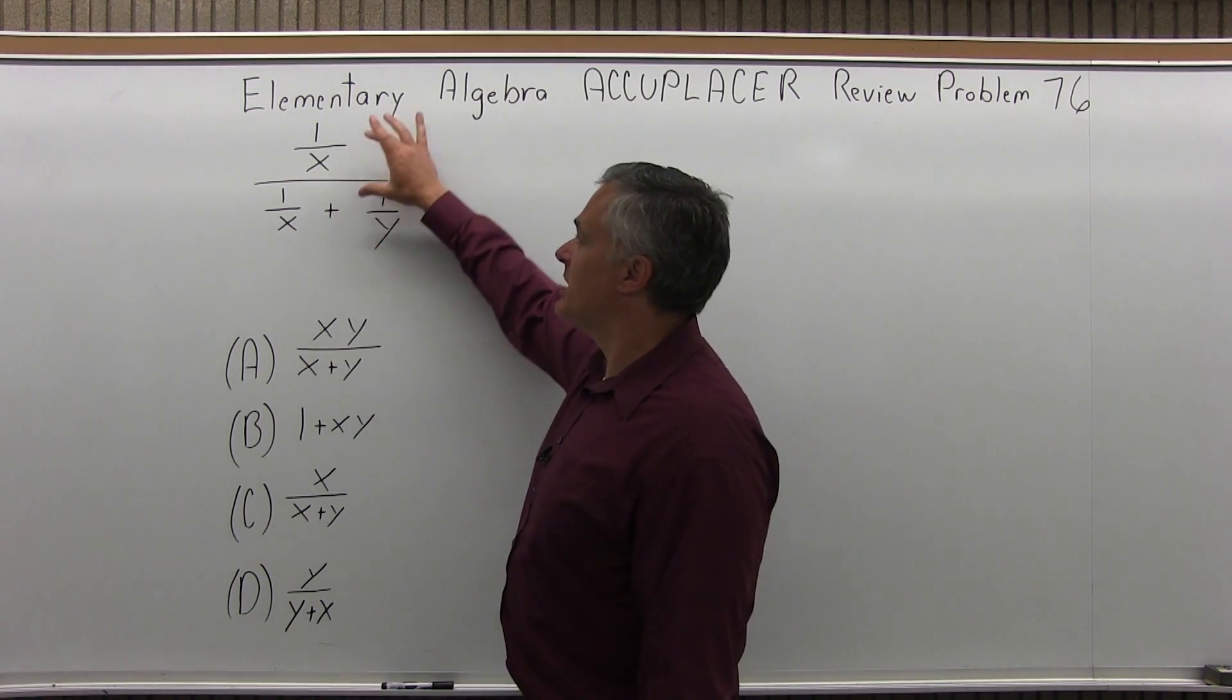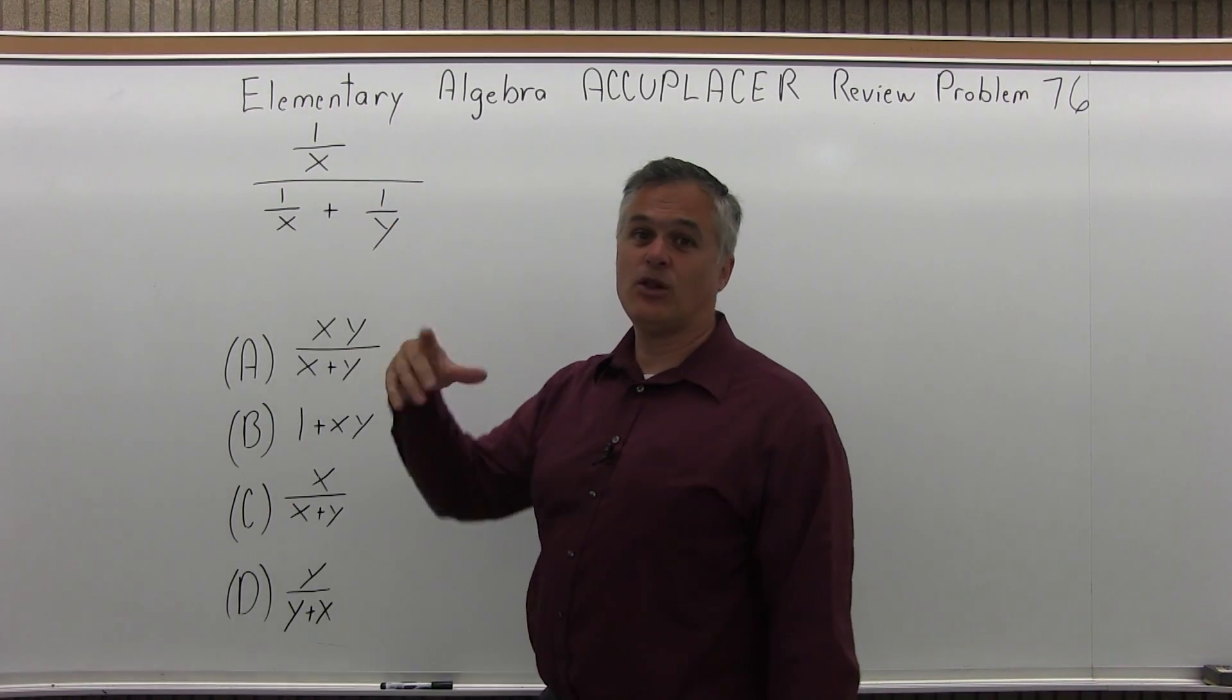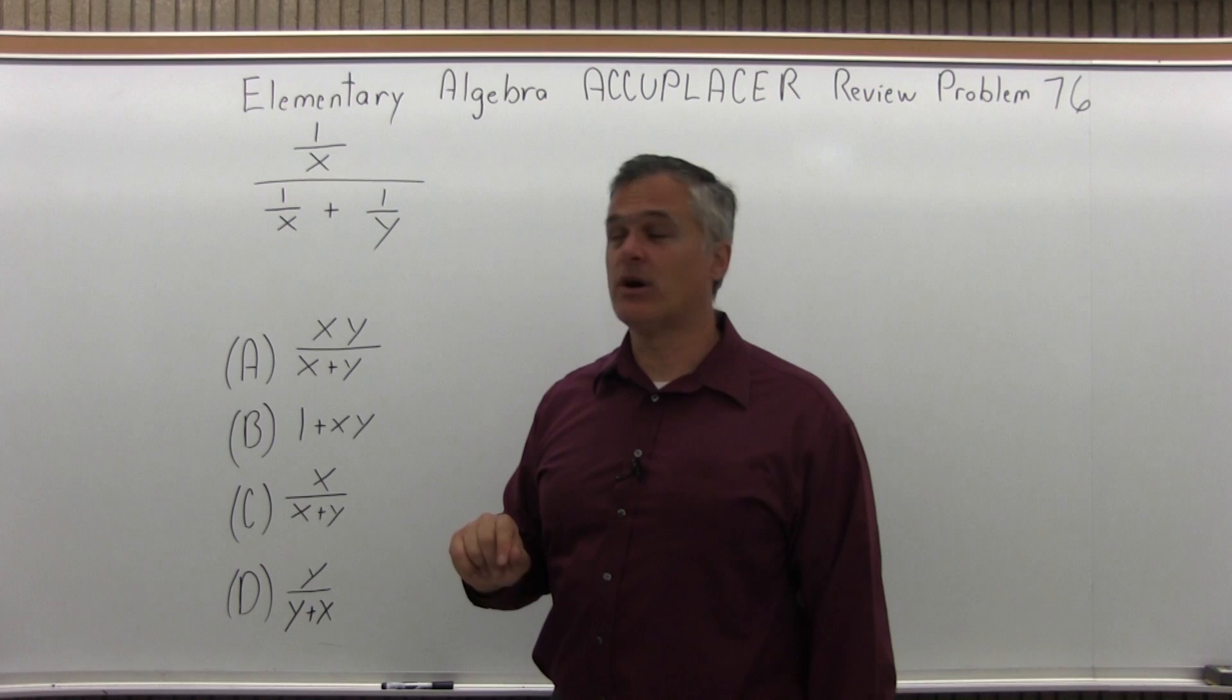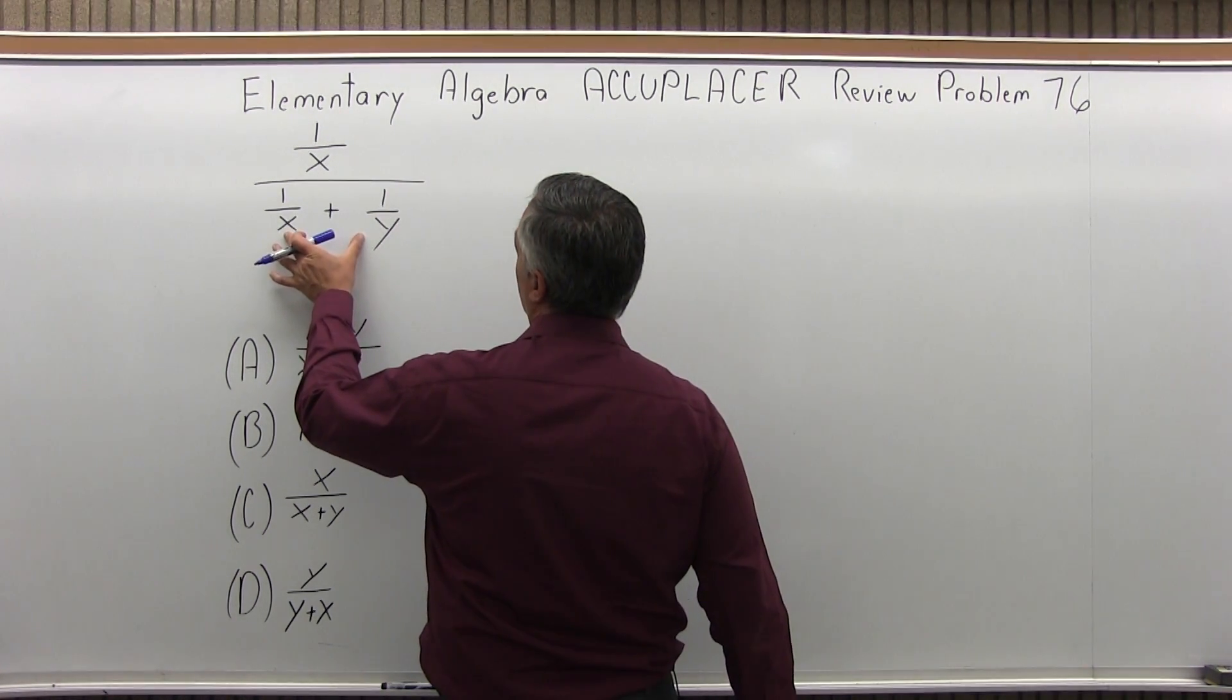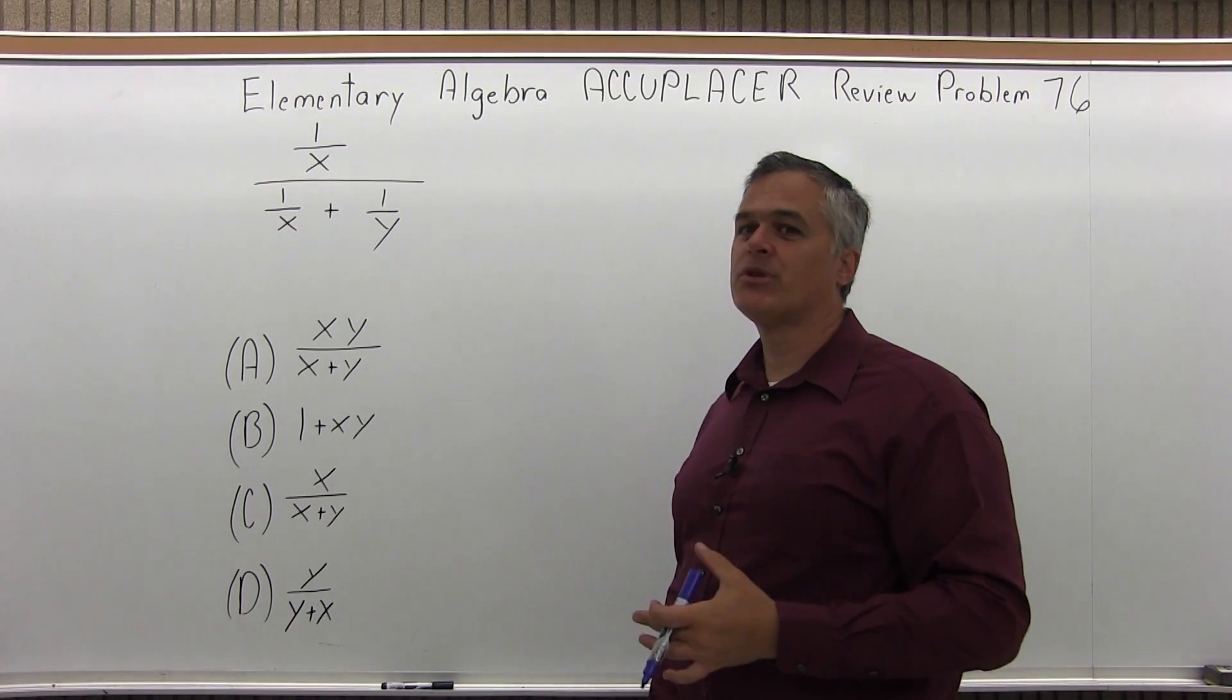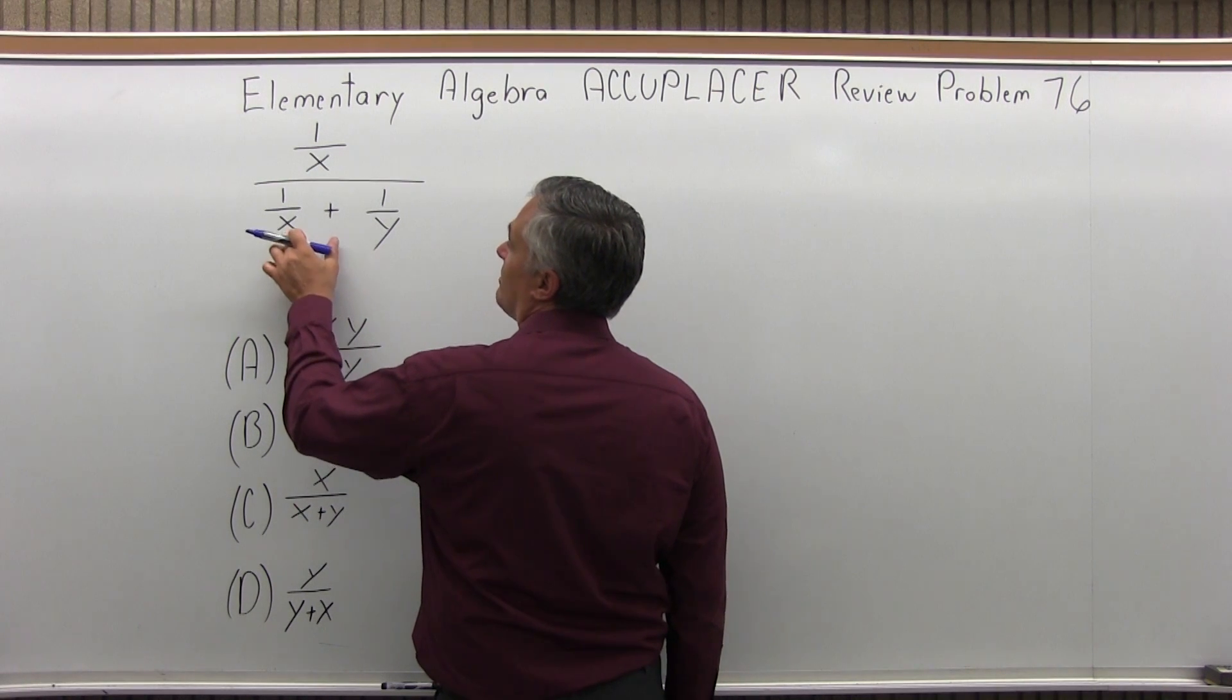What I'd like to do is make one fraction on the top, one fraction on the bottom, and then the lower fraction, I want to invert it or flip it and multiply times the top one. Now, to get one fraction on the bottom, I'm going to need to find the common denominator. One denominator is an x and the other is a y. I can't put them together until they're the same. I can make them the same by making them both an xy.